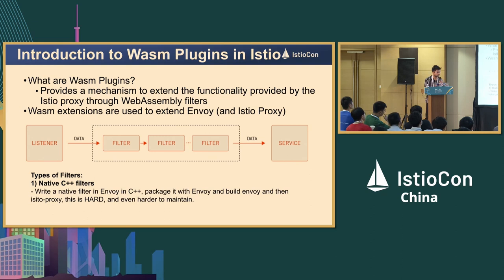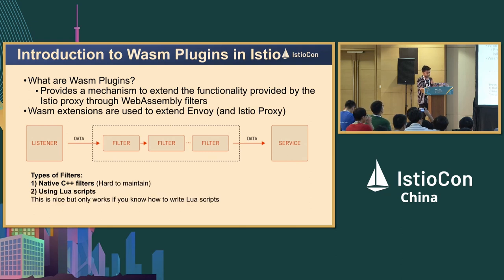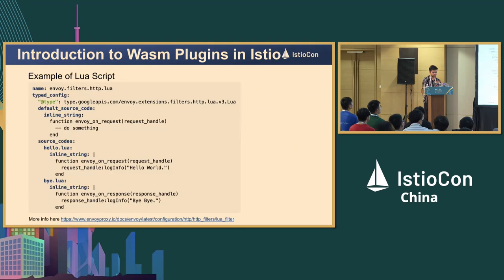There are multiple ways to create filters. On a high level, there are three types. One is using native C++ filters — you write your filters in native C++, recompile Envoy in a fork, use that new Envoy binary, and create an Istio proxy out of it. But this is hard. Another way is to create Lua scripts, which is nicer, but we need to write Lua code and it's a bit hard to maintain.